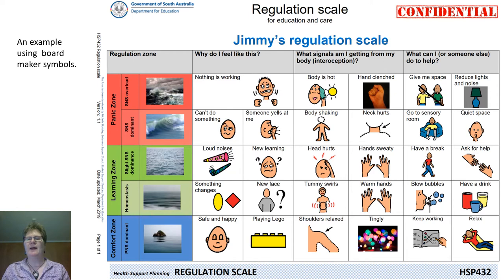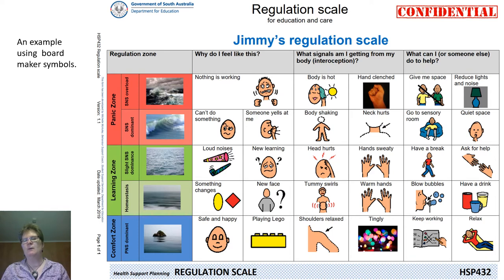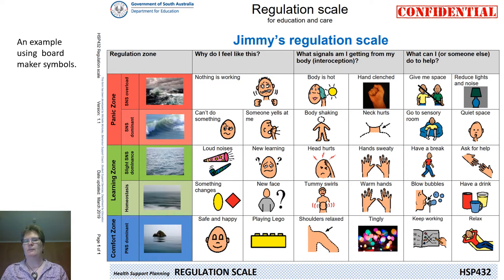So for example, in the comfort zone, 'I feel tingly.' That tingly might not be a feeling you personally associate with your comfort zone, and it's possible the child selected it because they liked the picture — and over time they might revisit and say, 'actually, tingly isn't what I mean.' The last section is: what can I or someone else do to help? This is about getting people to stay in or return to their learning zone — and possibly to return to comfort zone. These are the co-regulation and self-regulation strategies.